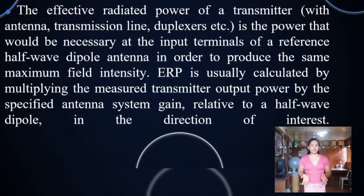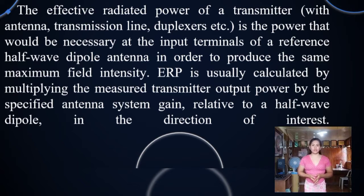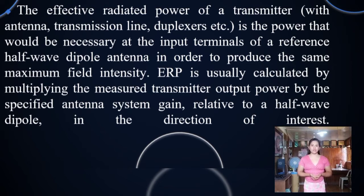The effective radiated power of a transmitter with antenna transmission line, duplexer, etc. It is the power that would be necessary in the input terminals of a reference half-wave dipole antenna in order to produce the same maximum field intensity. ERP is usually calculated by multiplying the measured transmitter output power by the specified antenna system.